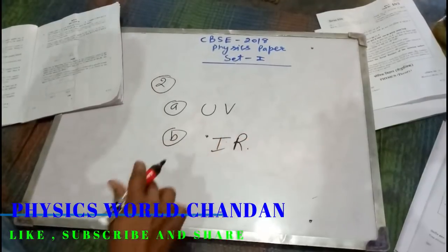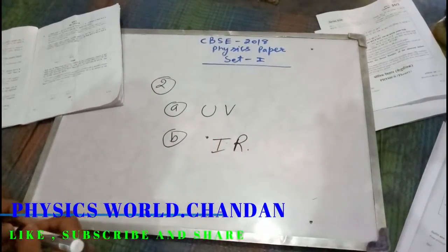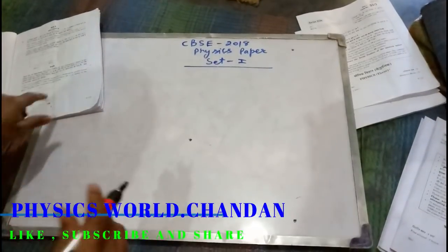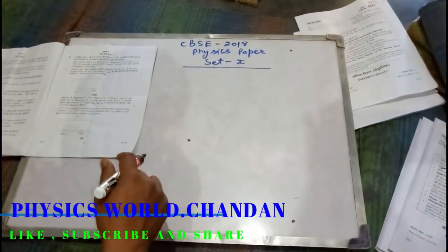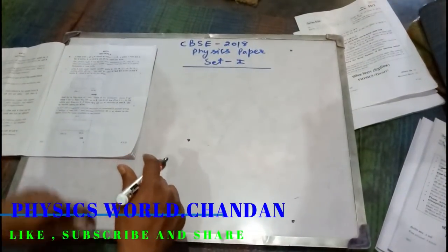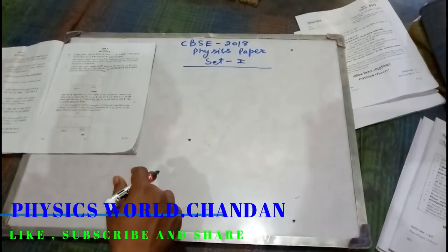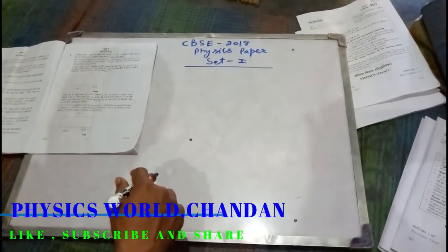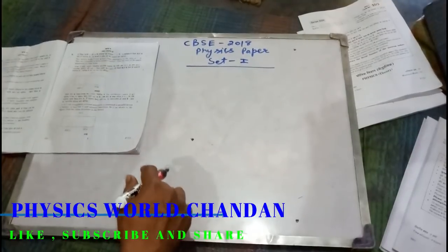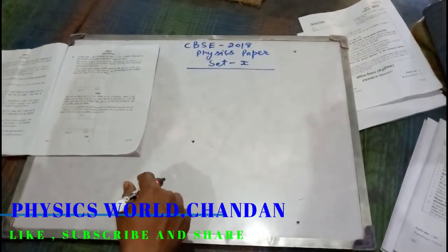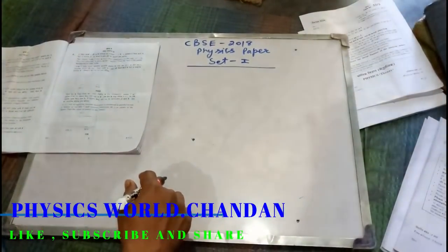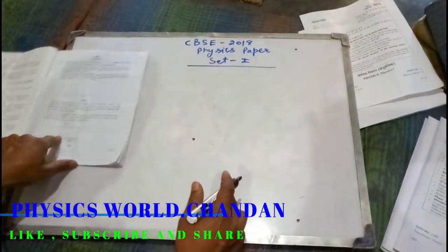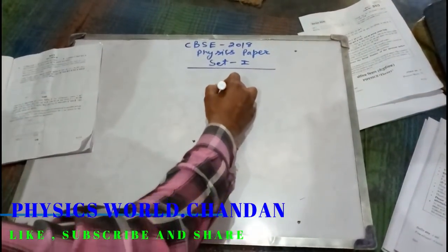Okay friends, ab hum dekhenge third question. Third question: draw the graph showing the variation of photoelectric current with applied voltage for two incident radiations of equal frequency and different intensity. Mark the graph for the radiation of higher intensity. Yeh aapka graph jo plot hoga.